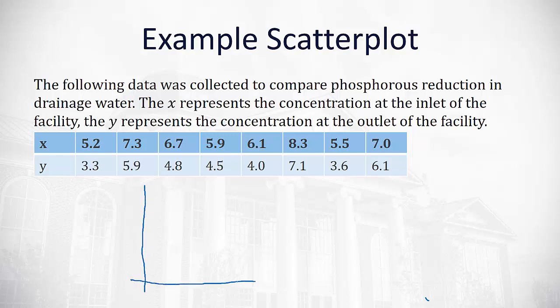Well, if we make a scatter diagram, let's go ahead and start this scatter diagram at 5. We're going to go up as high as 8, 5, 6, 7, 8, 9.